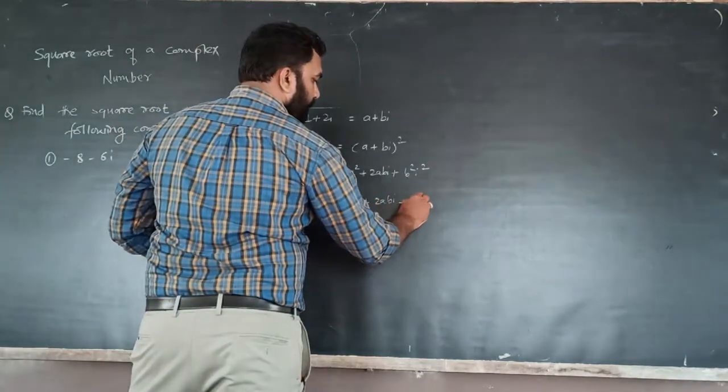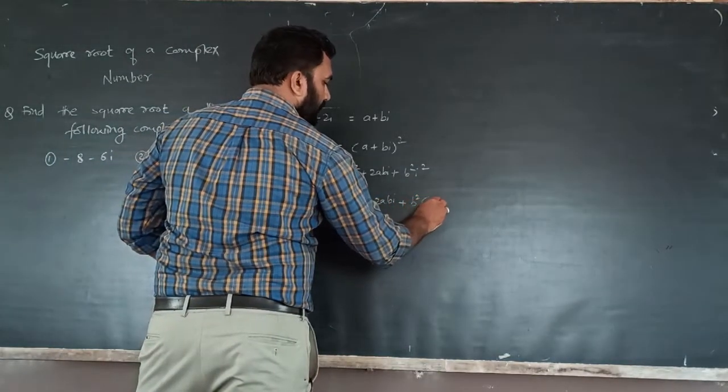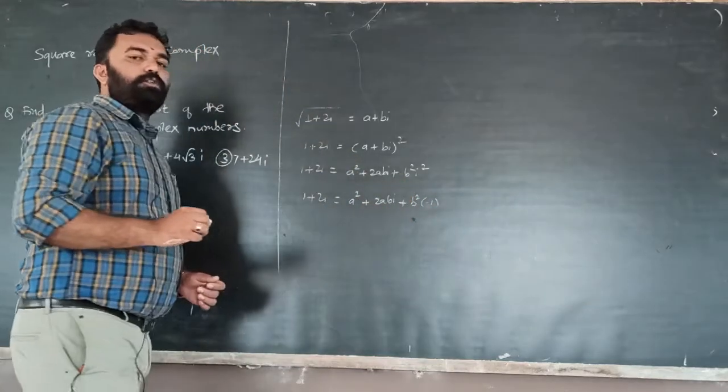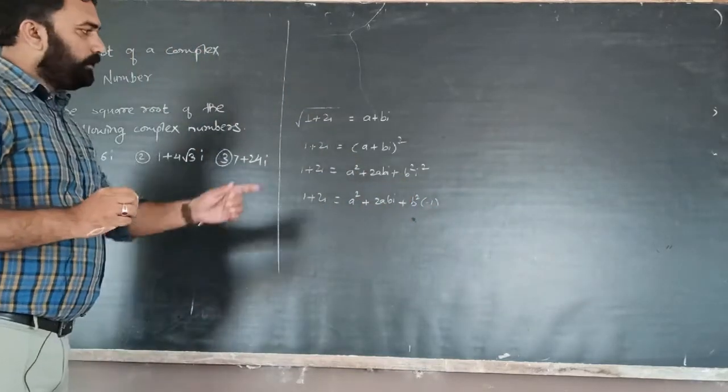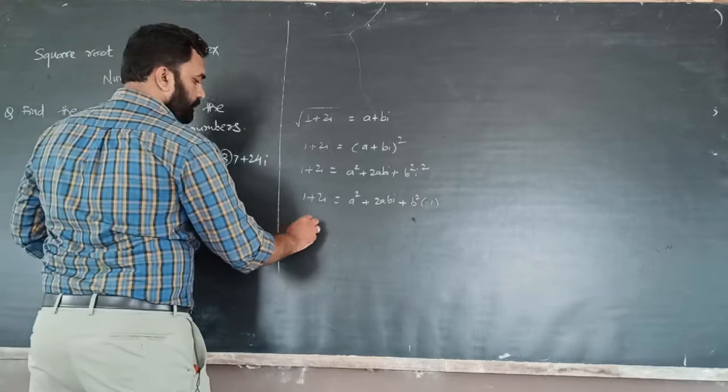I have already told you that i is equal to root of minus 1, and i squared is equal to minus 1.